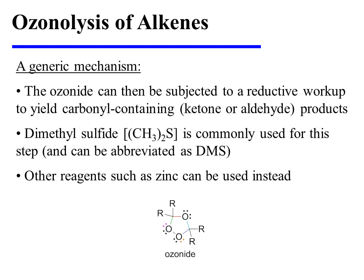The ozonide can then be subjected to a reductive workup to yield carbonyl-containing products — either ketones or aldehydes, or a combination of both, depending on what the R groups represent. Dimethyl sulfide is commonly used for this step and is sometimes abbreviated as DMS. However, other reagents can also be used; for instance, zinc is also suitable for the reductive workup.